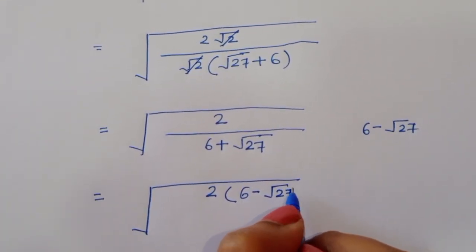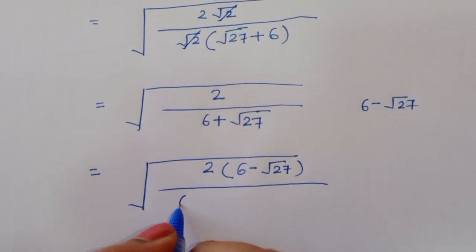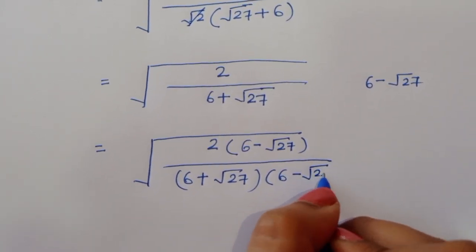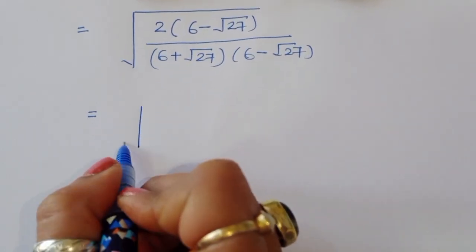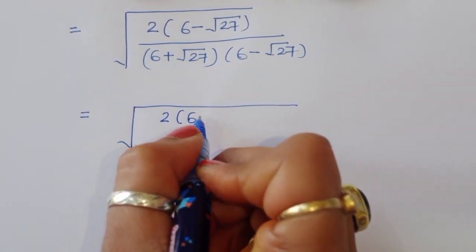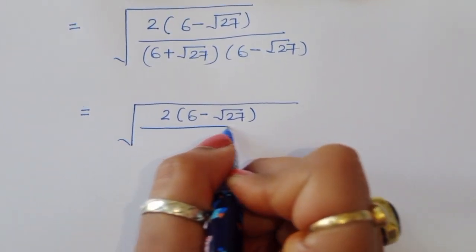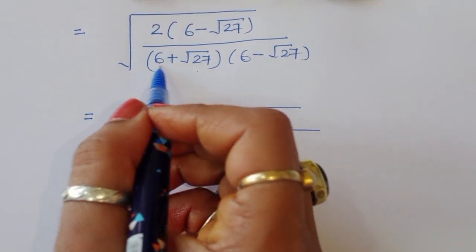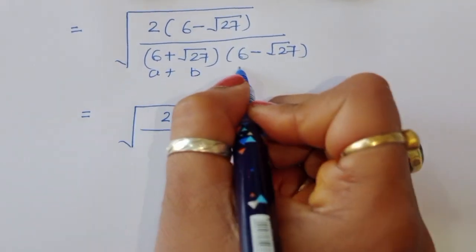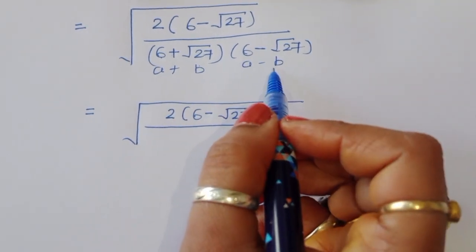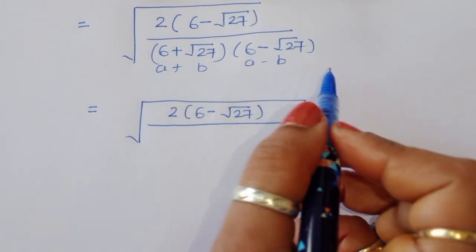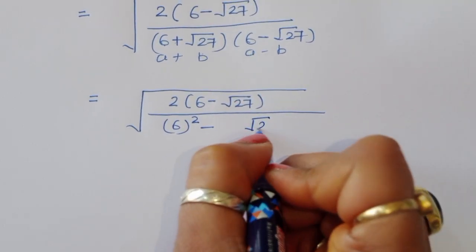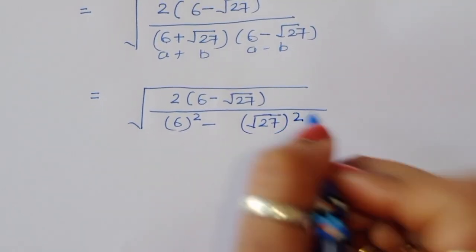To rationalize, we multiply numerator and denominator by (6 minus square root of 27). We get 2 times (6 minus square root of 27) divided by (6 plus square root of 27)(6 minus square root of 27). Using the formula (a+b)(a-b) = a² - b², with a = 6 and b = square root of 27, the denominator becomes 6² minus (square root of 27)².